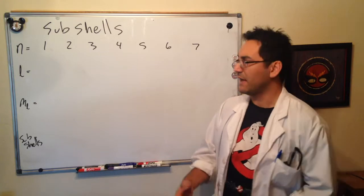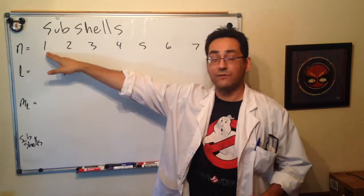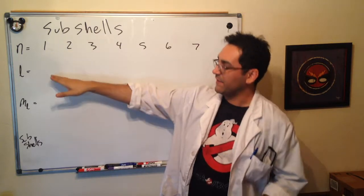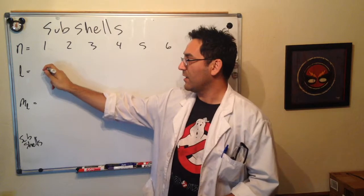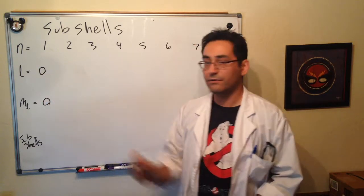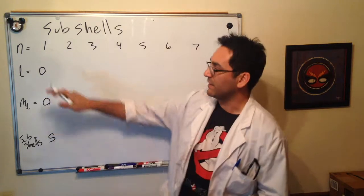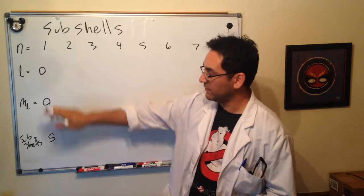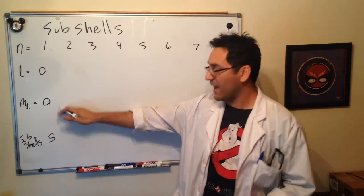So hydrogen and helium have electrons in the principal quantum energy level of n equals 1. Their l values, if you remember from the last video then, are 0. When l is 0, ml is 0. And this gives us an s subshell. Because the value of l tells us our subshell. ml tells us how many of these we have.